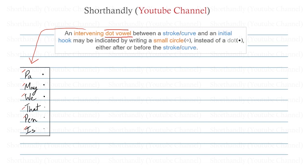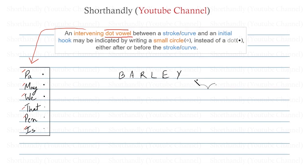It's time to understand the complete statement, and for that we'll be taking the word 'barley.' Of course we can write the word barley like this, but we know that shorthand is all about speed. The less time we take to make a particular word in shorthand, the more our speed will be. So we'll try to write this word with fewer outlines, which will take less time and eventually increase our speed.